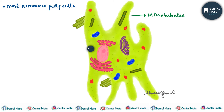Let us talk about the structure of fibroblasts. They have a typical stellate shape with numerous branching. They contact and join by intercellular junctions to the processes of other fibroblasts.